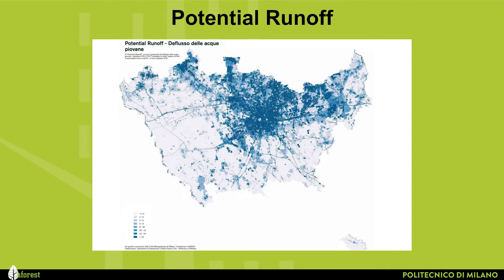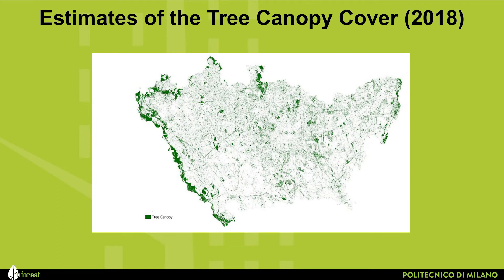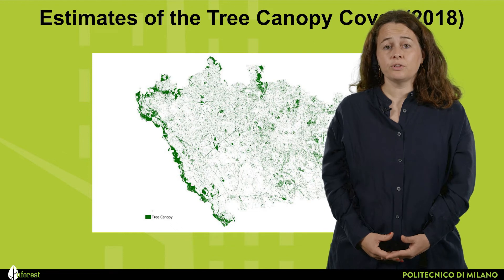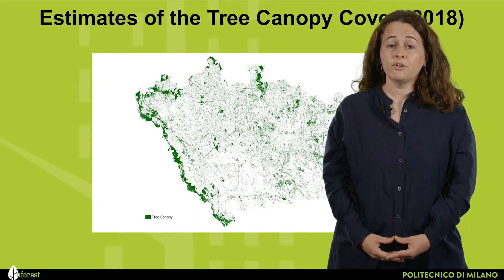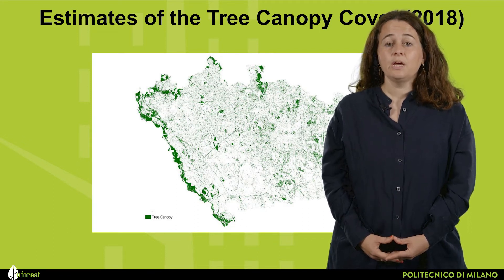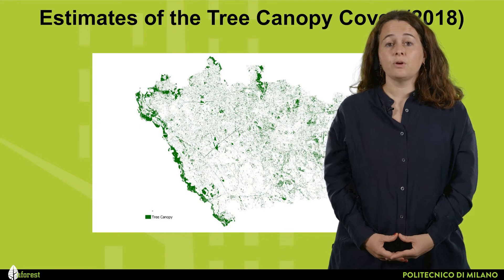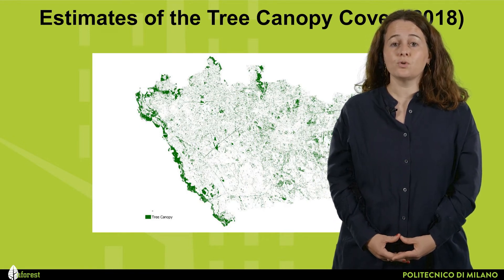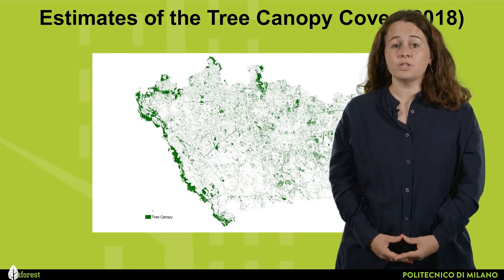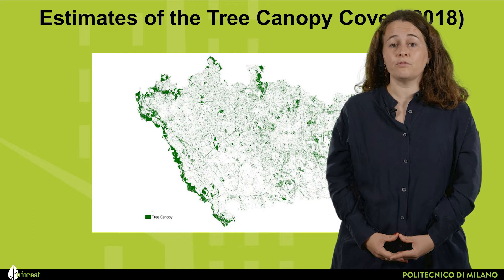The third element regards the potential runoff, to understand on one side which areas are prone to floods, and on the other side which areas can be de-sealed. The fourth element is the estimation of the existing canopy cover, which is the surface of all canopies of the existing trees. This is very important information, as it maps all the existing trees both in public and private areas. It is seminal information because it provides and maps all the trees, and also gives the idea that all areas can be considered relevant to the transformation of our urban environment.